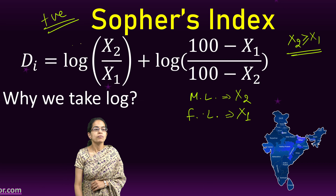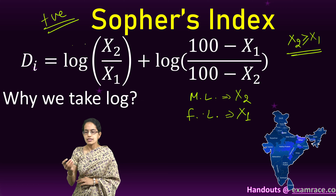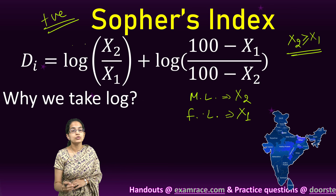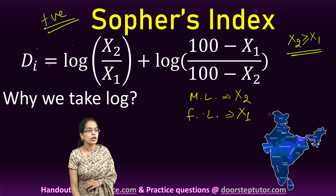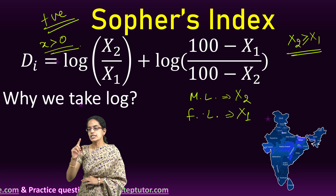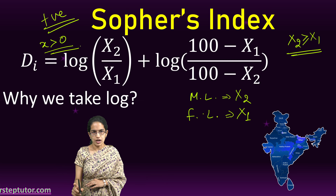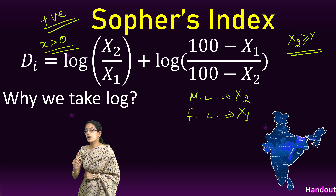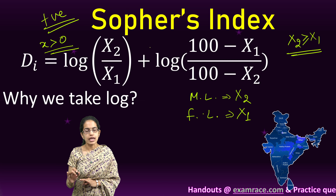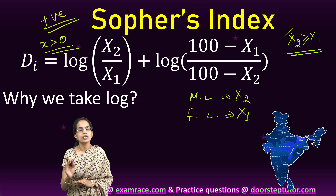Because since we are taking a log, we need a positive value. The natural logarithmic function is defined only for parameters where x is greater than 0. If it is a negative value, then the log would be undefined. So, in order to make our work simpler, we put a simple way of depicting it where x2 should be greater than or equal to x1.